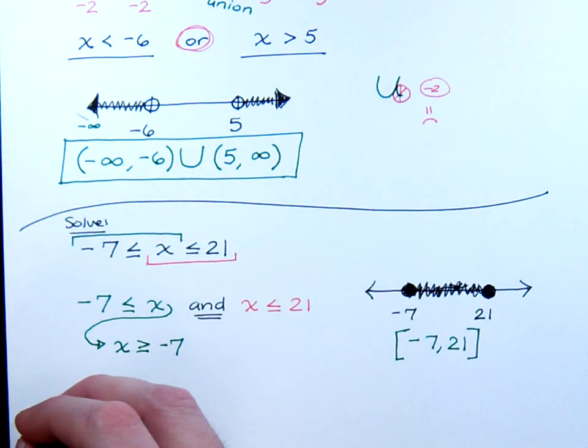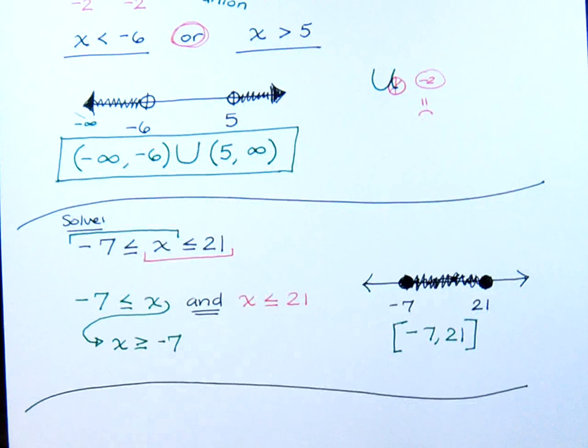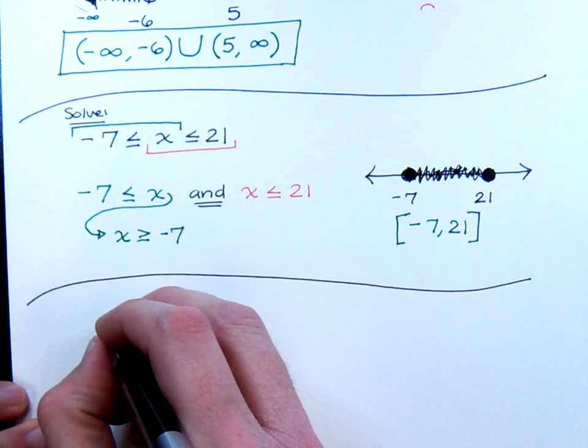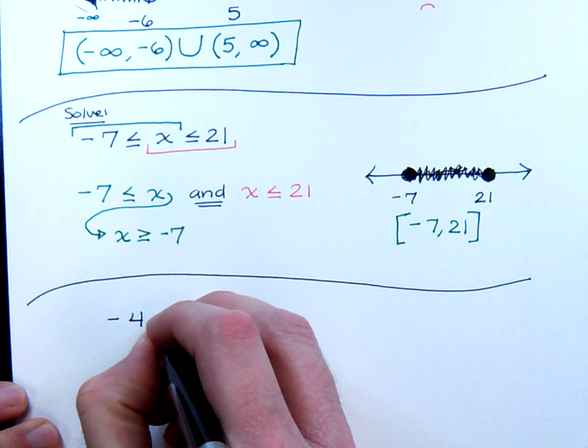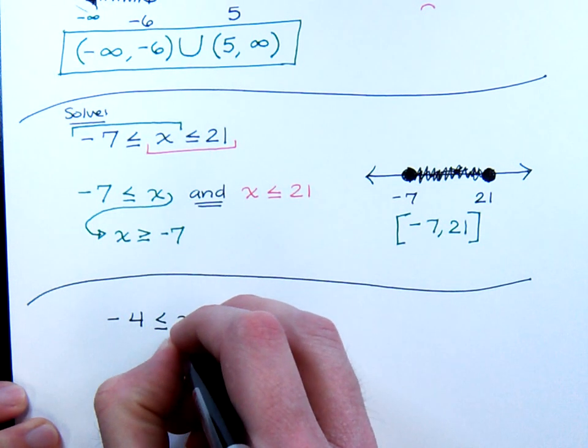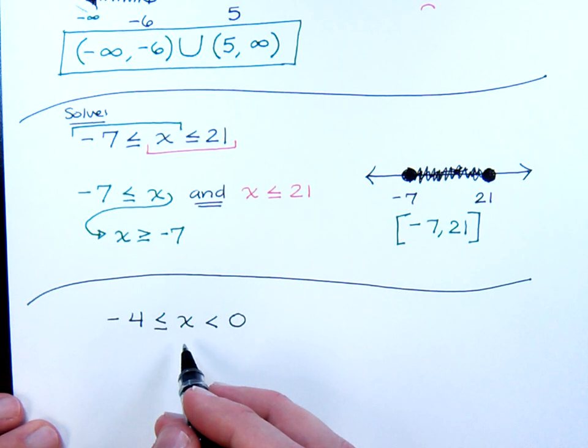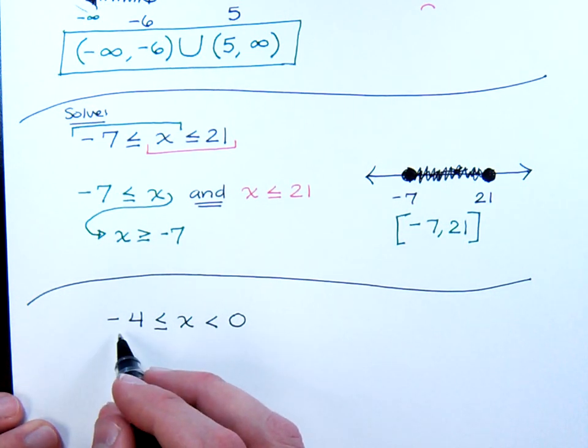let's do one last quick example here. Suppose I have negative four is less than or equal to x, which is less than zero. Notice that you have x totally by itself. And he's in between what two numbers? He's in between negative four and zero.